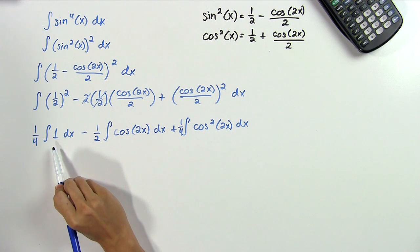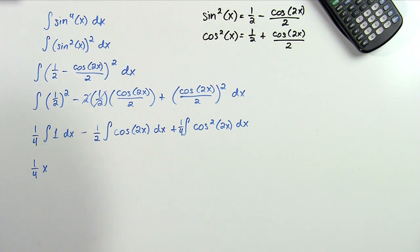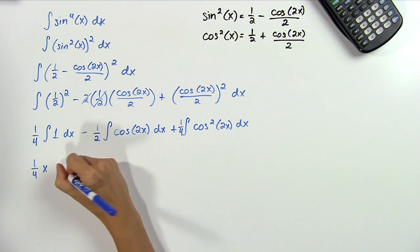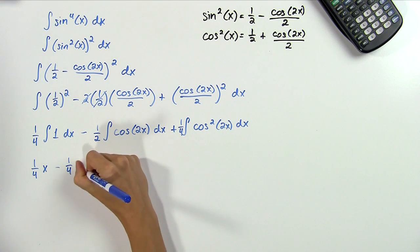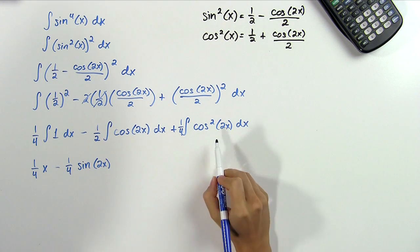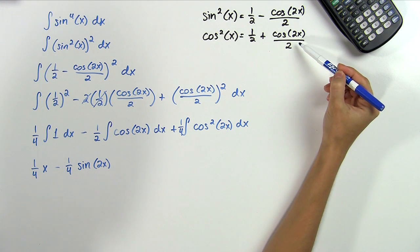The first integral is easy since it's just x. For the second integral we can use a simple u substitution of u is equal to 2x and that will give us minus 1 fourth sine of 2x. This last integral is a little more complicated so we'll need to use our second property on the side here.